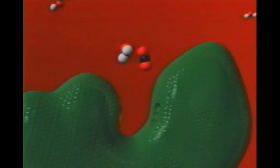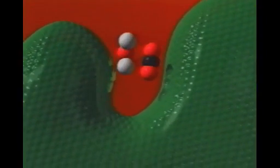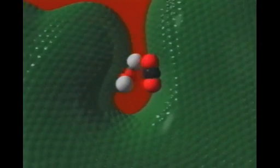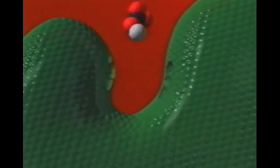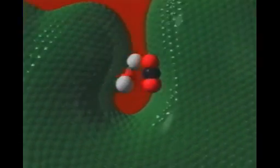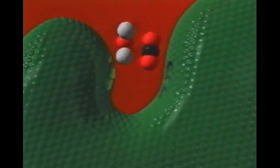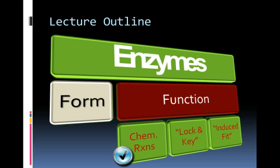The enzyme attracts the reacting molecules, or substrates, to its active site, then releases the end products. Its effect is astounding. Each enzyme can assemble hundreds of thousands of new molecules every second. So that's basically the way that enzymes are built. Now let's take a look at what they do.